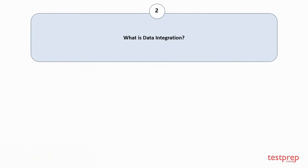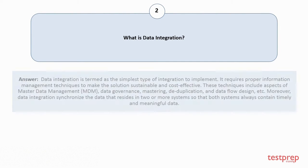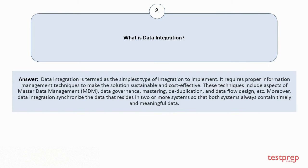Question number 2: What is data integration? Data integration is termed as the simplest type of integration to implement. It requires proper information management techniques to make the solution sustainable and cost-effective. These techniques include aspects of master data management, data governance, mastering, deduplication, and data flow design, etc.